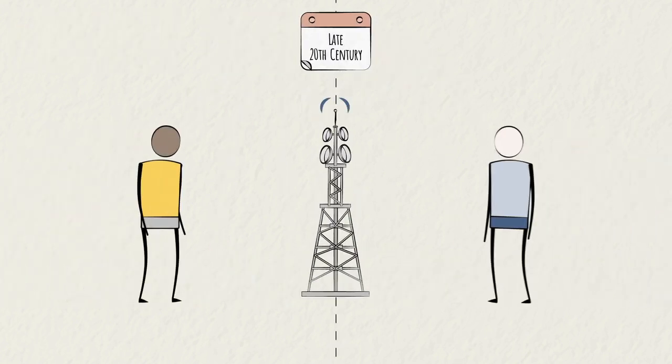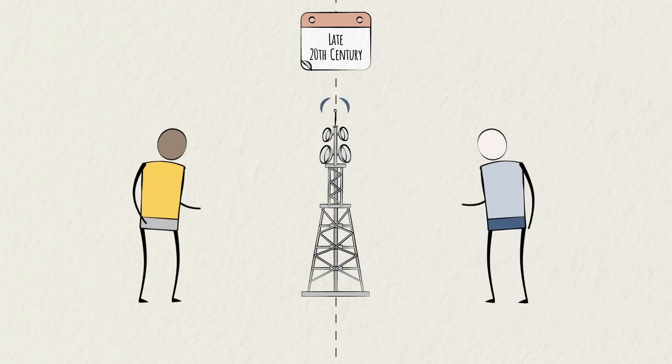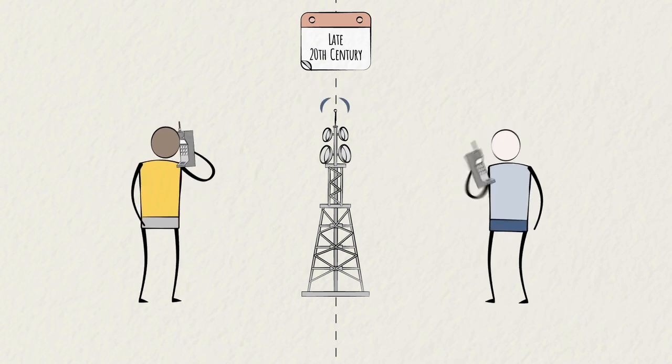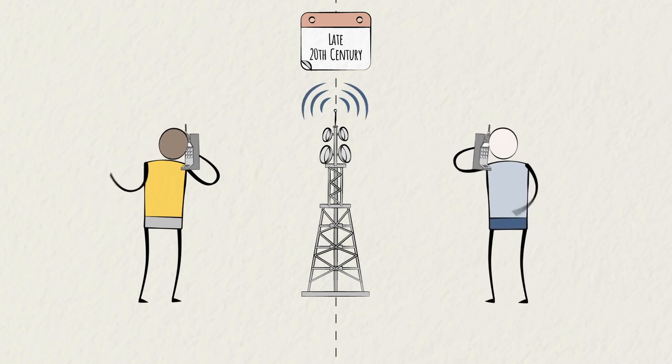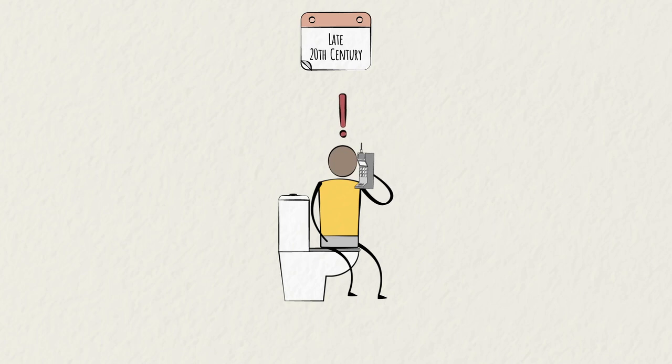Towards the end of the 20th century, cellular networks were developed, which used radio waves for two-way voice communication to and from wireless phones, aka cell phones. Communication could now happen anywhere at any time.